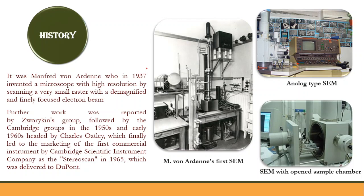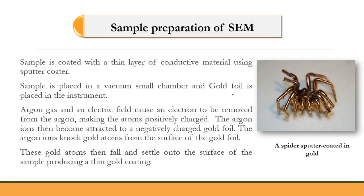Regarding history, SEM development started with Manfred von Ardenne in 1937, who invented a microscope with high resolution capable of scanning a very small raster. Further work was reported by other groups, and in 1965 the Cambridge Scientific Instrument Company provided the first commercial SEM. You can see the difference between an analog-type SEM and the modern apparatus used today.